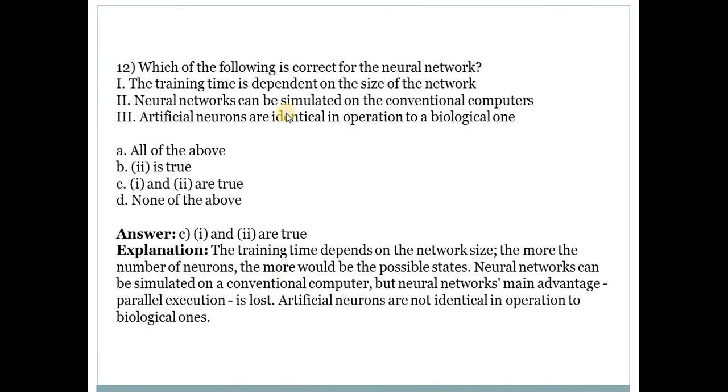Last question is: Which of the following is correct for the neural nets? Here also some statements are given for neural network. Number 1: Training time is dependent on the size of the network. Number 2: Neural networks can be simulated on conventional computers. So number 1 and number 2 are correct. Number 3: Artificial neurons are identical in operation to a biological one. Number 3 is false. So artificial neurons compared with biological neurons is not identical.